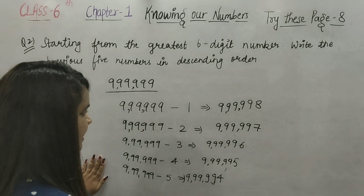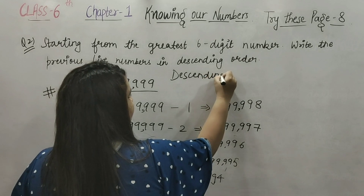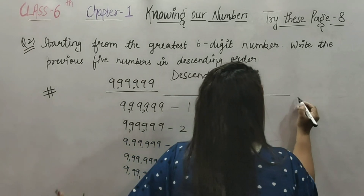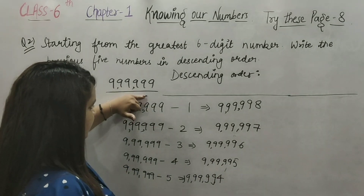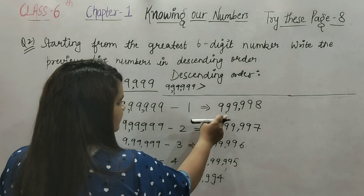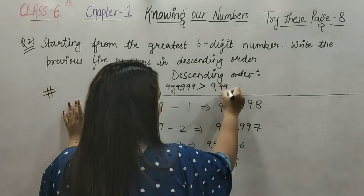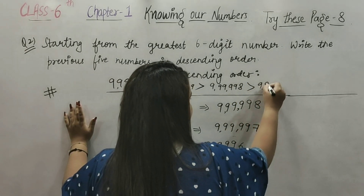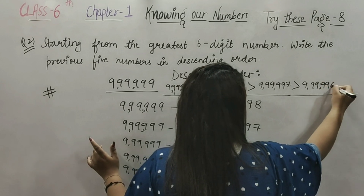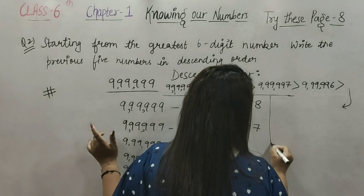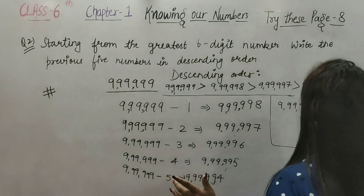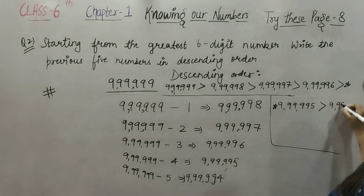तो ये 5 नंबर्स previous हैं। इनको descending order में लगाना है। सबसे पहले आया जो already given था: 999999। उसके बाद उससे छोटा: 999998। फिर 999997, फिर 999996, फिर 999995, और अंत में 999994। इस तरह descending order में ये 5 previous नंबर्स लिखे जाएंगे।